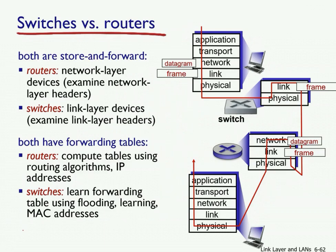Both switches and routers are store-and-forward devices. Routers are network layer (layer 3) devices that examine IP headers, work on IP datagrams, and compute forwarding tables using routing algorithms such as distance vector or Dijkstra's algorithm, forwarding based on IP addresses. Switches are link layer (layer 2) devices that examine MAC headers, use self-learning to build their switch tables, and forward based on destination MAC addresses.